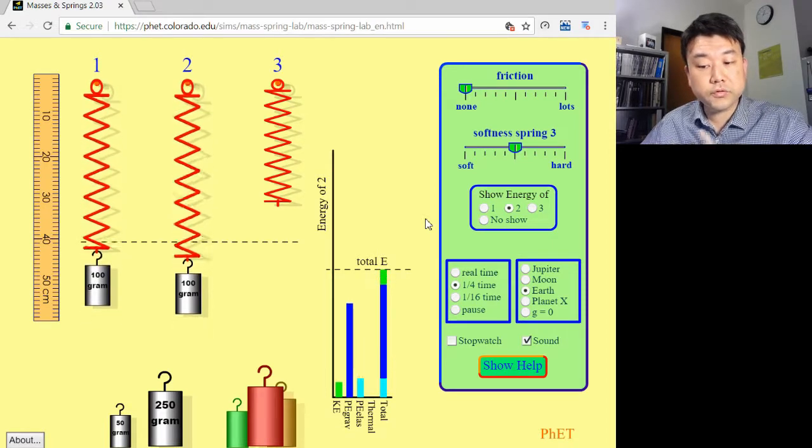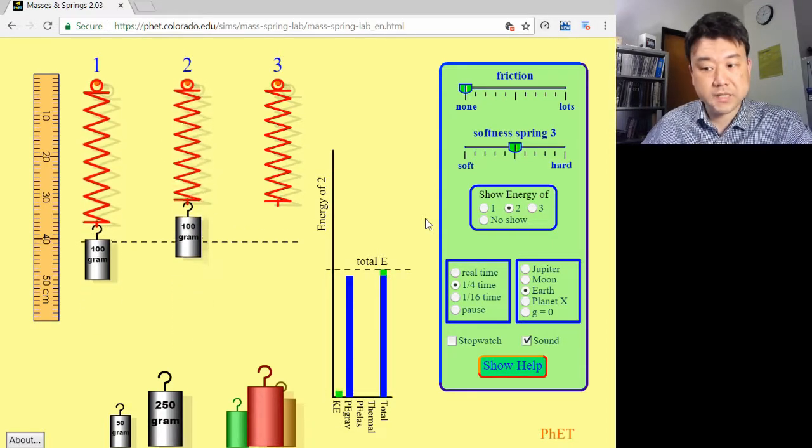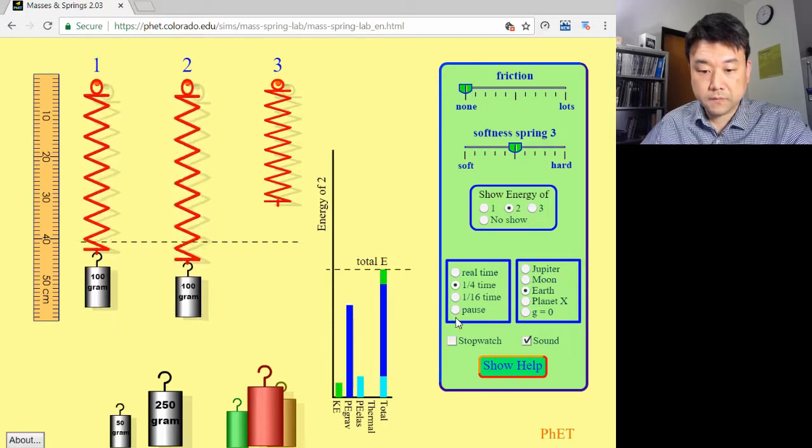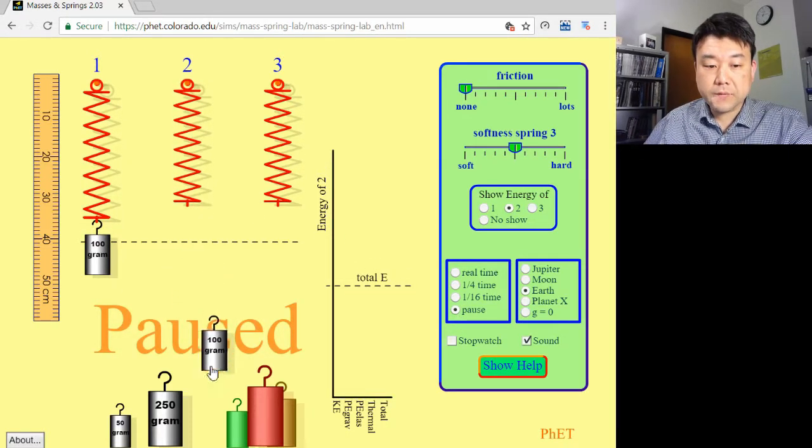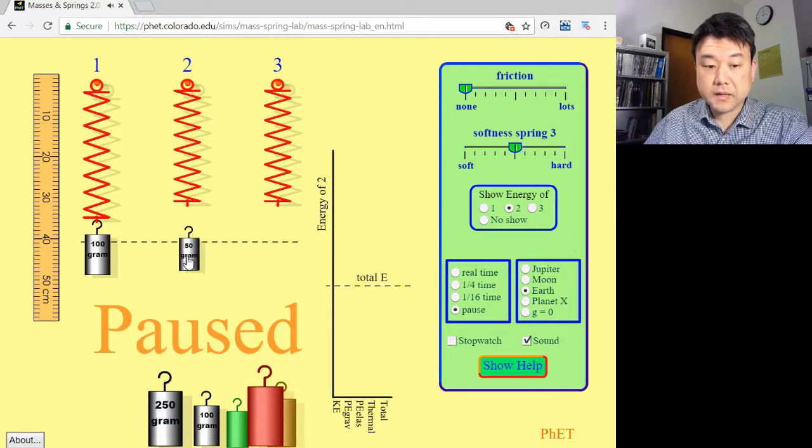In order to change this frequency, you have to change the system itself. For example, if you change the mass, then the frequency will change.